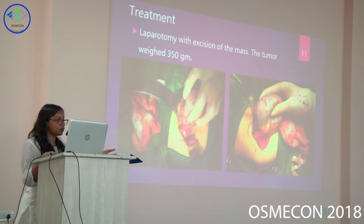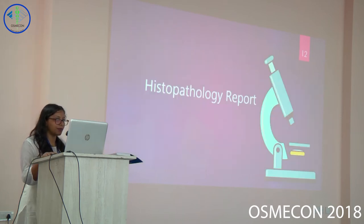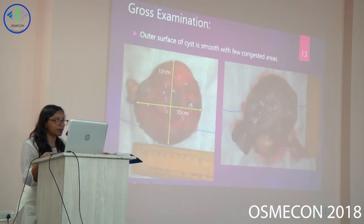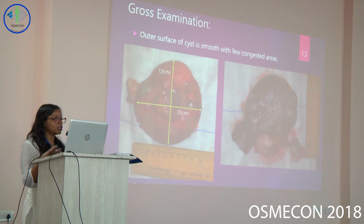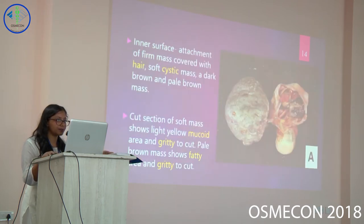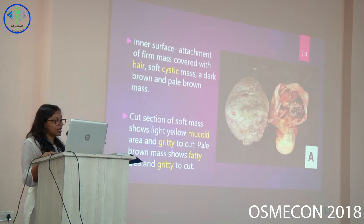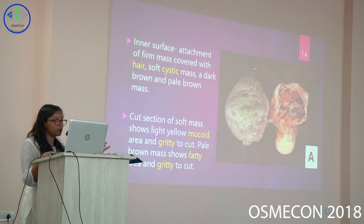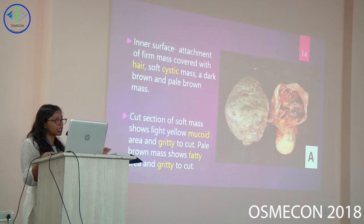Treatment was surgical excision of the tumor, which weighed 350 grams. On histopathology, the outer surface of the cyst showed congested areas and measured 12 by 10 centimeters with a thickness of 4 centimeters. The inner surface had a firm mass covered with hair, a soft cystic mass, and dark brown and pale brown areas. On cut section, there were mucoid areas and ground-like masses, both gritty to cut.